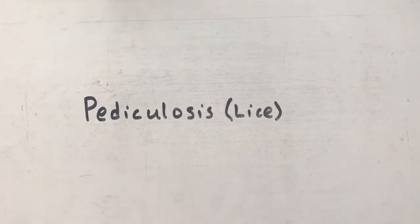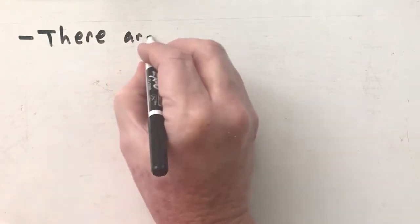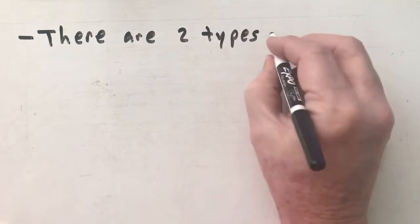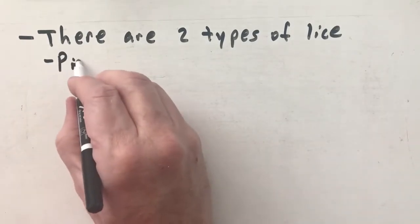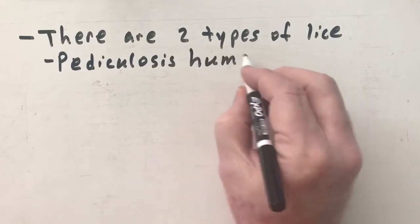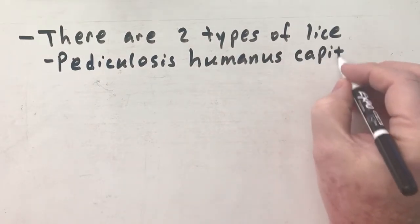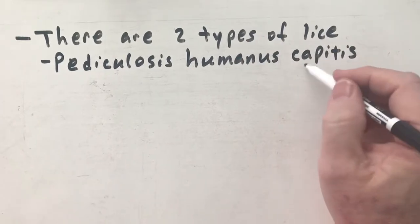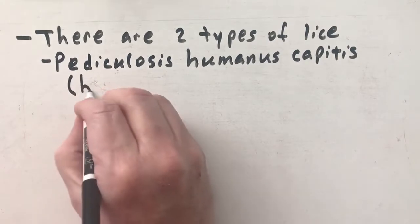In this video we're going to talk about pediculosis, which is lice. There are basically two types of lice. The first one we call Pediculosis humanus capitis. If you think about where you put a cap on your body, you put it on your head. The 'itis' means inflammation, 'humanus' means it affects humans, and pediculosis tells you the species, which is lice. So this is basically head lice — it affects the head.